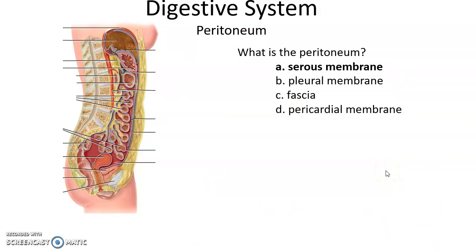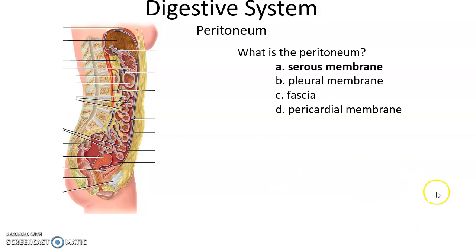The peritoneum is a large serous membrane. It connects to and wraps around lots and lots of structures in our abdominal cavity. By wrapping around these structures, it helps to reduce the friction from the intestines and stomach moving around slightly within the abdominal cavity. It also helps to attach these structures to each other and to the abdominal wall.